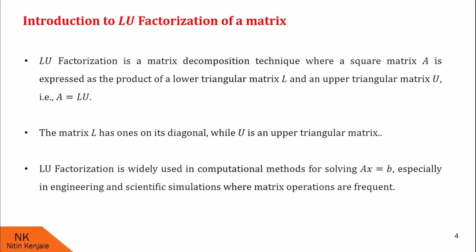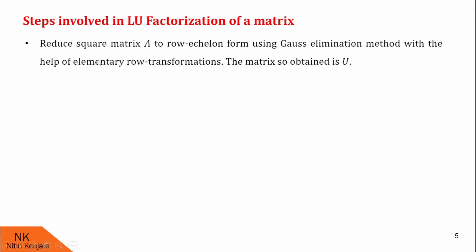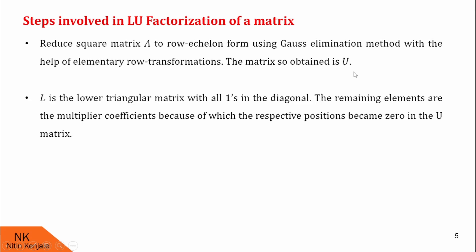Now let us understand the steps involved in LU factorization. First we reduce the square matrix A to row echelon form using Gauss elimination method with the help of elementary row transformations. The matrix so obtained is called U. L is the lower triangular matrix with all 1s in the diagonal, and the remaining elements are the multiplier coefficients because of which the respective position becomes 0 in the U matrix.